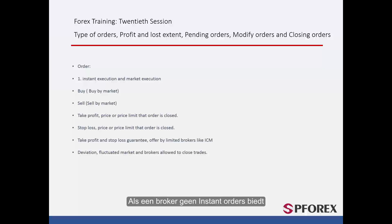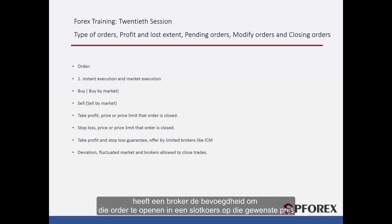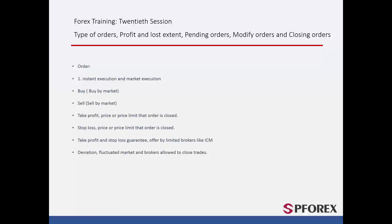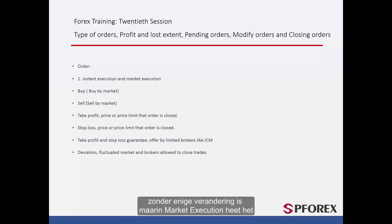If a broker does not provide instant orders but a trader asks to open an order at an exact price, and that order cannot be placed on the favoured price, the broker has authority to open that order at a price close to the desired price. Buy and sell in instant execution is called as-is without any change. However, in market execution it is called buy by market or sell by market.